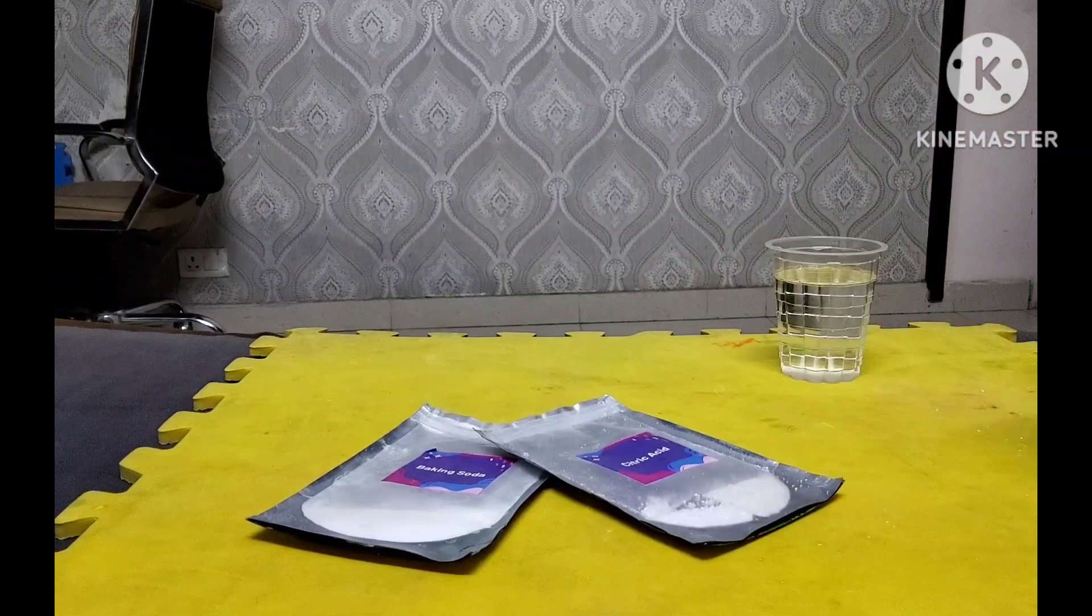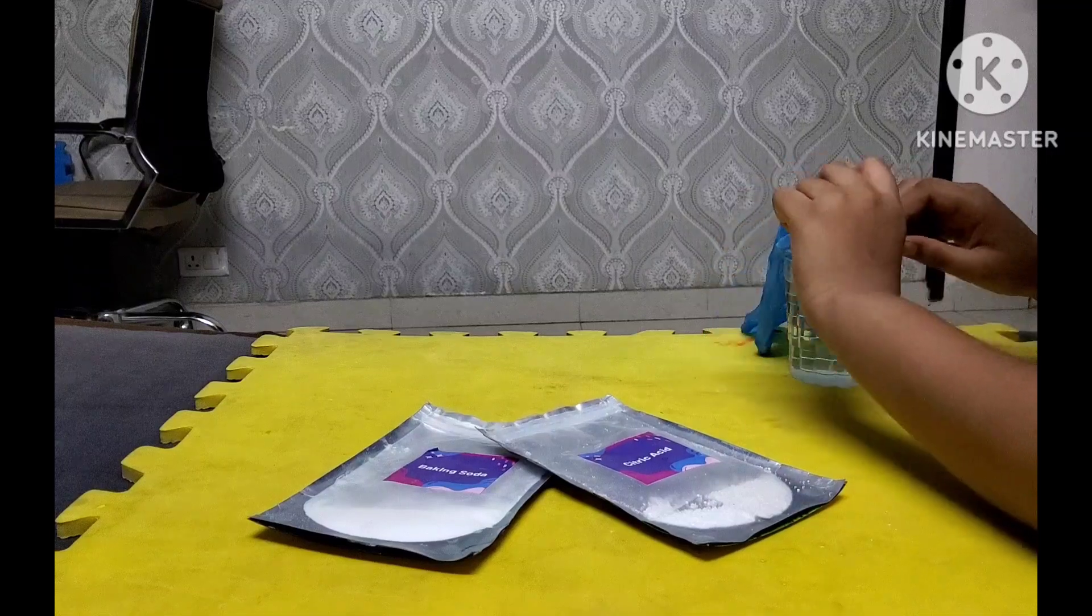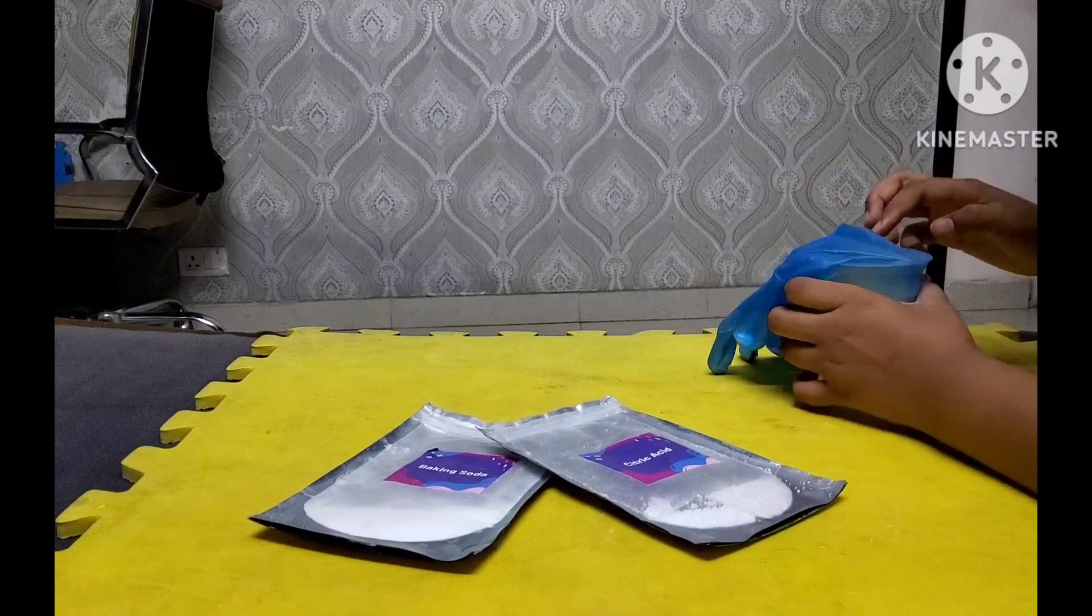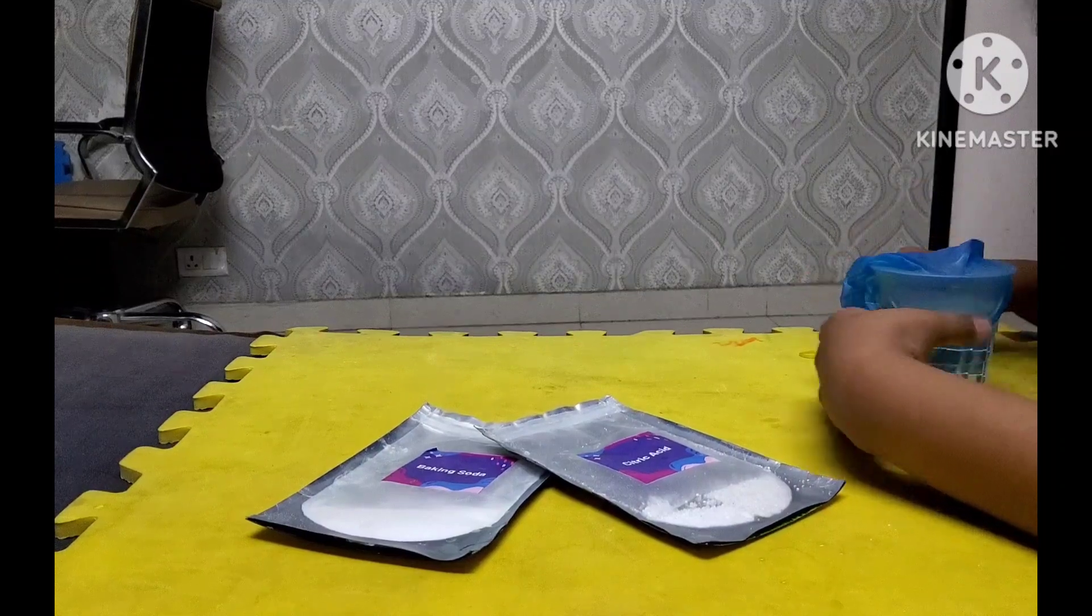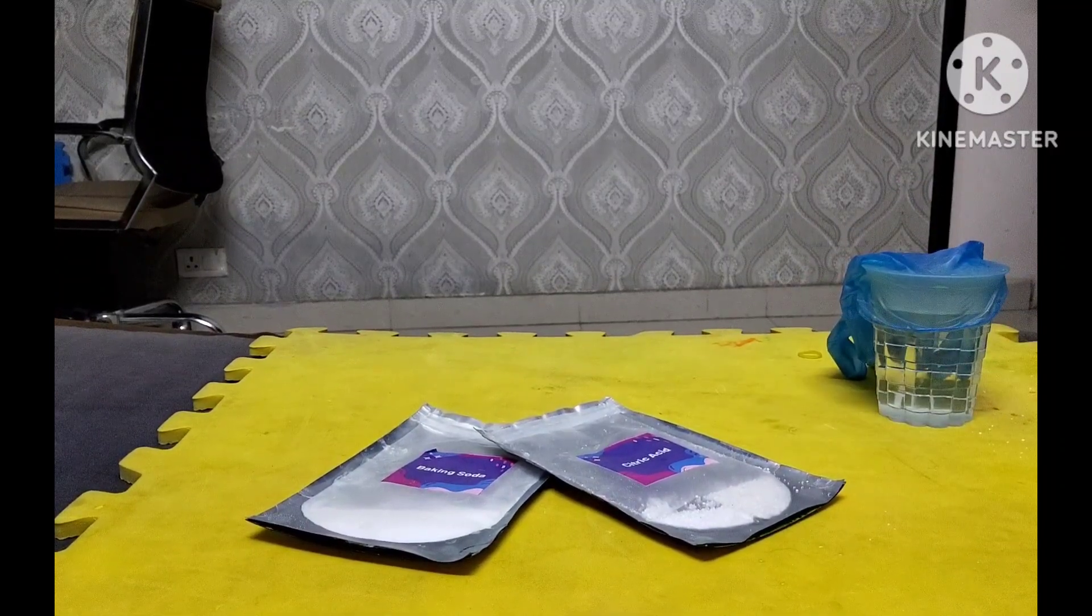Now put this glove on the water like this, but you also make sure that the citric acid doesn't fall on the water. Now let's put the rubber band in it.